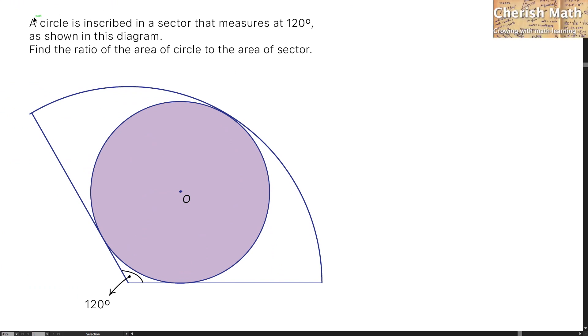Say hi from Cherish Math. This is the question. A circle is inscribed in a sector that measures at 120 degrees, as shown in this diagram. Find the ratio of the area of circle to the area of sector.